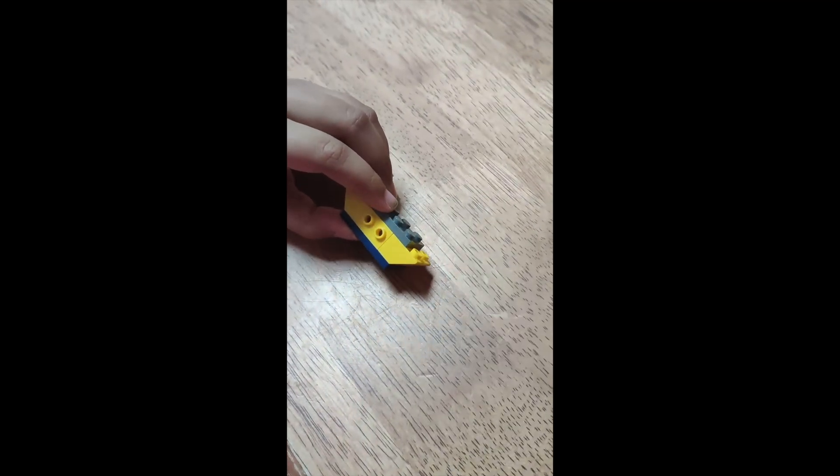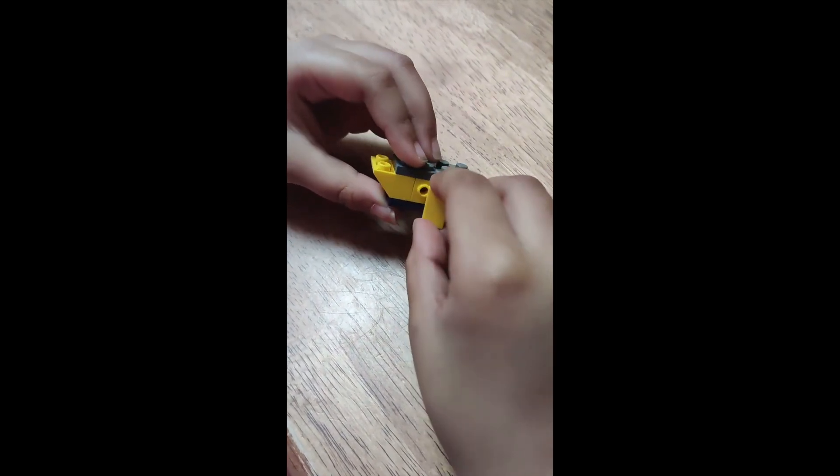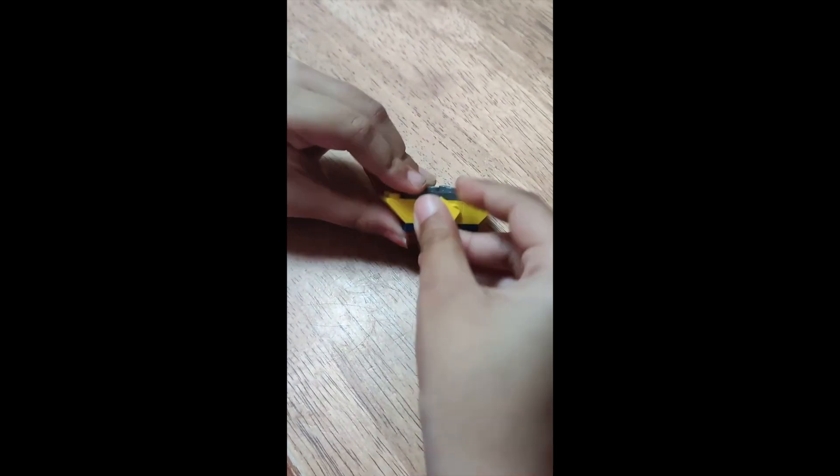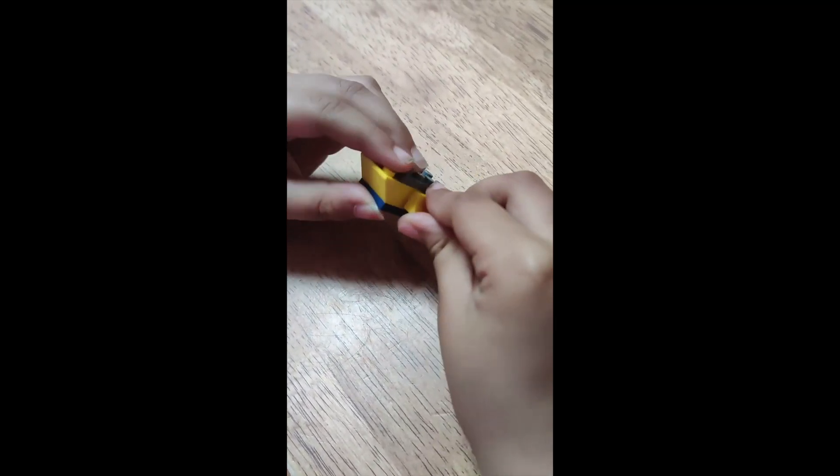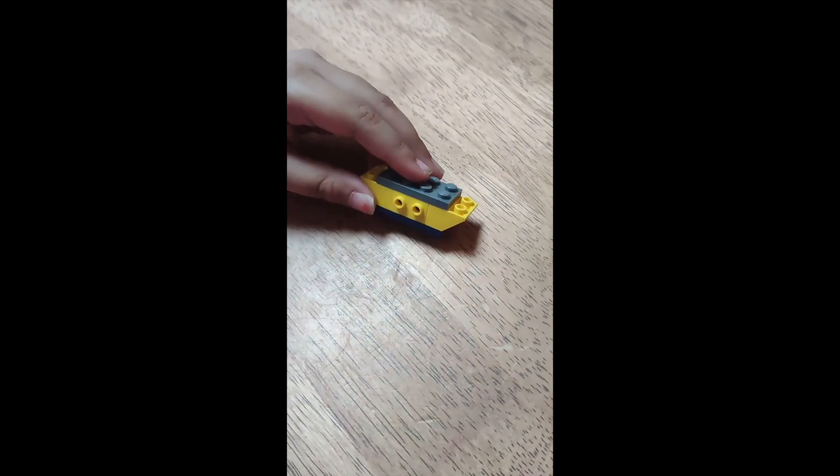Now you put these pieces over here. Oh yeah the wrong way, like this. Like little wings on each side.